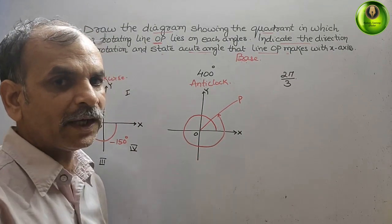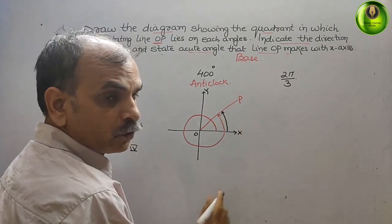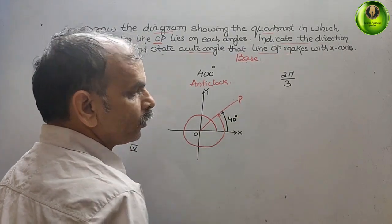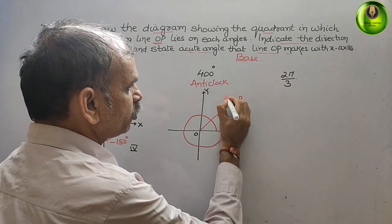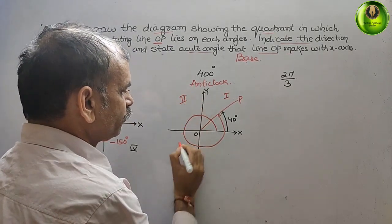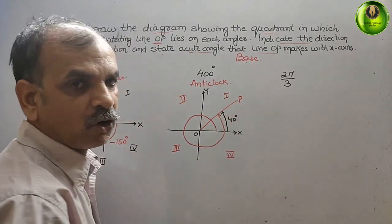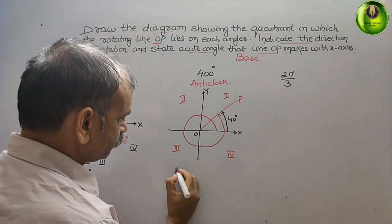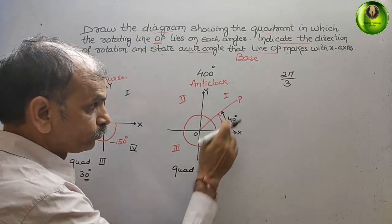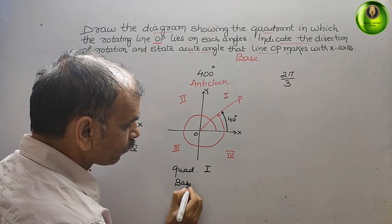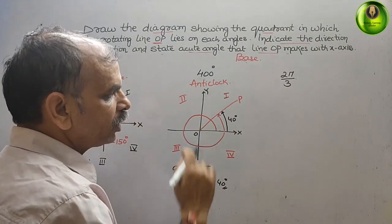The acute base angle is the angle from OP to the x-axis, which is 40 degrees. The direction is anticlockwise, the quadrant is the first quadrant, and the base angle is 40 degrees.